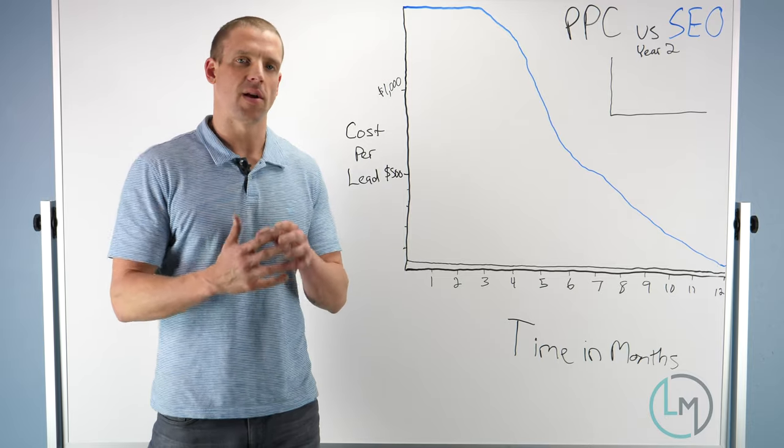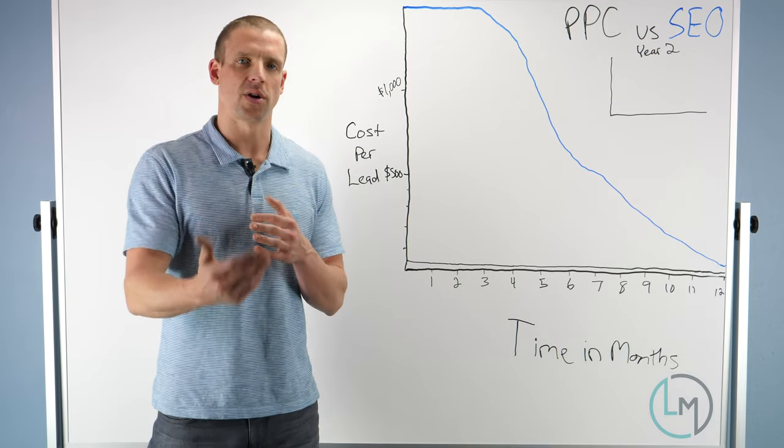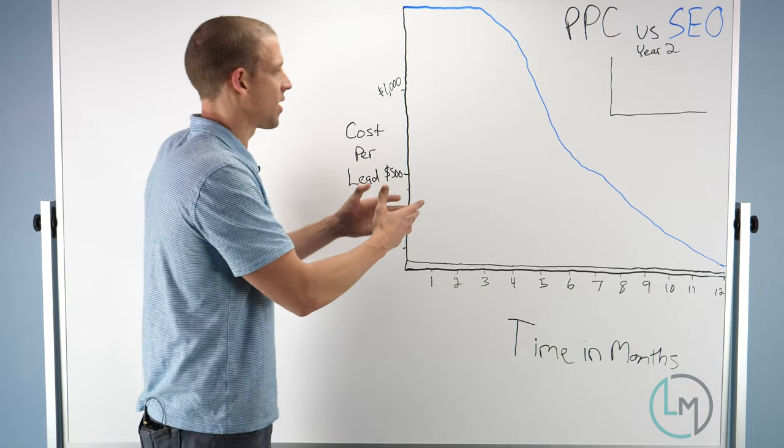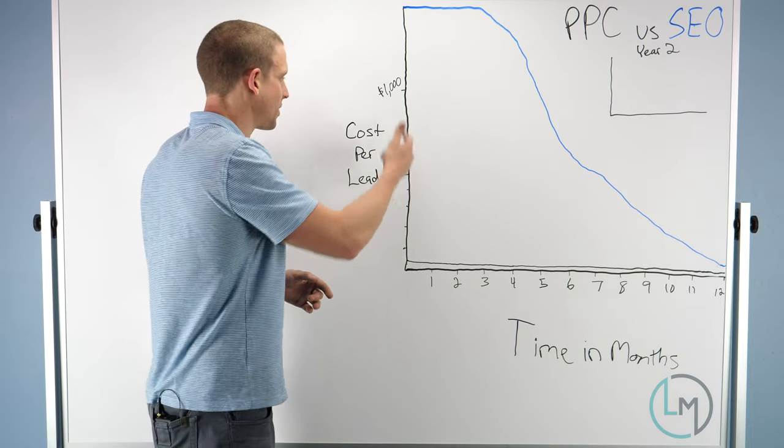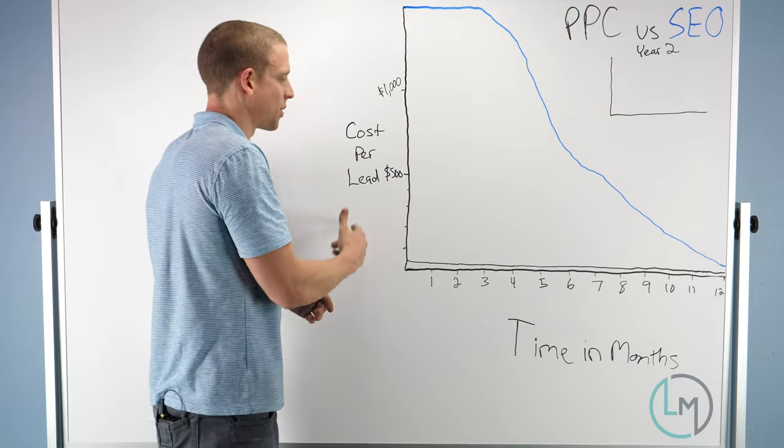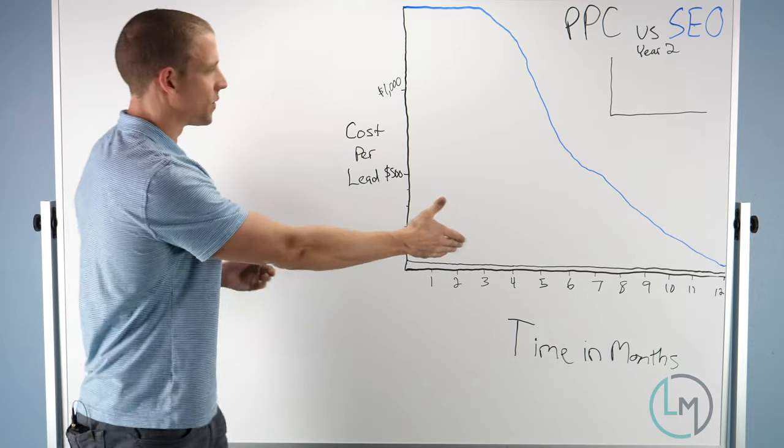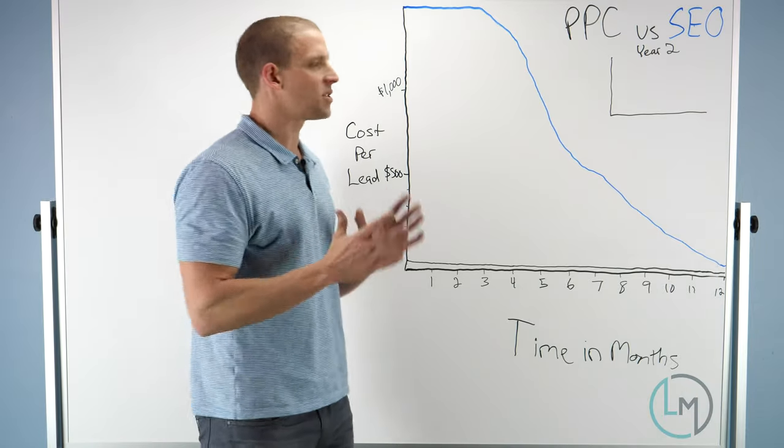I've drawn a chart here, and you're going to notice on the Y-axis we have your cost per lead; on the X-axis, time in months. We've got a full year here.